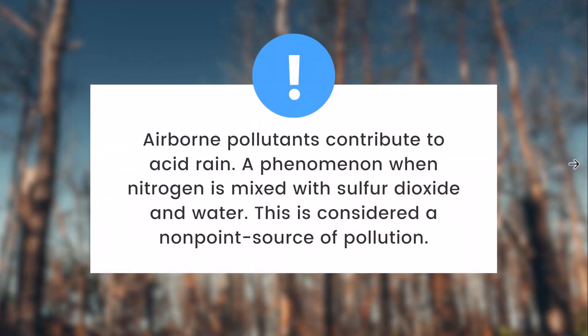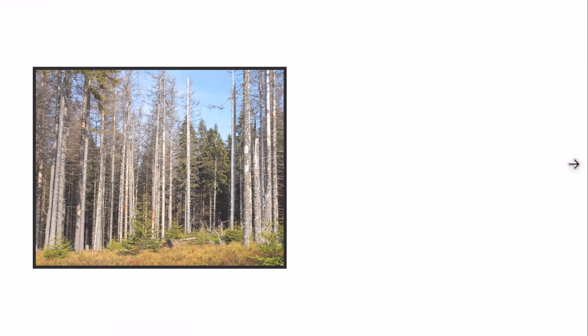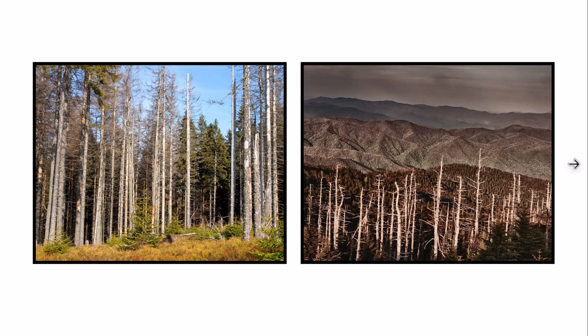Airborne pollutants can contribute to acid rain — a phenomenon when nitrogen is mixed with sulfur oxide and water, considered to be a non-point source of pollution. When too much pollution enters the air, we get acid rain. You can see on the left and right how trees have deteriorated because of polluted rainfall landing on the ground. So before the water even reaches the ground, it has already been polluted, which can cause major issues for the environment and eventual runoff.